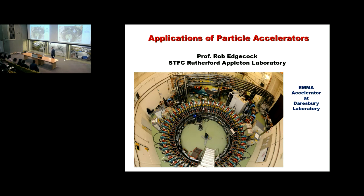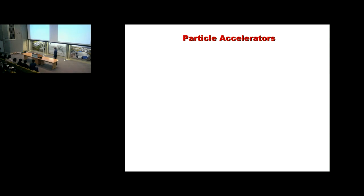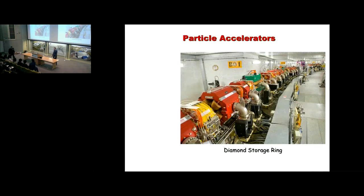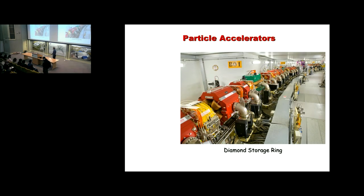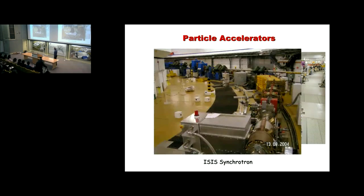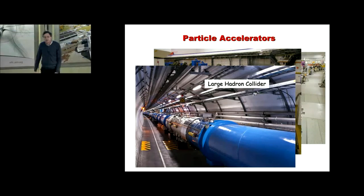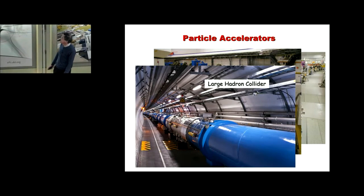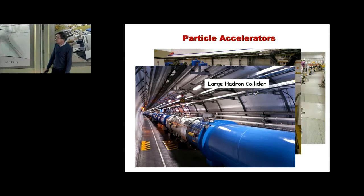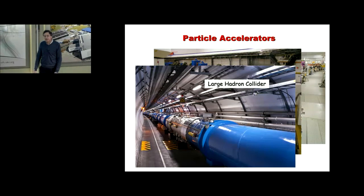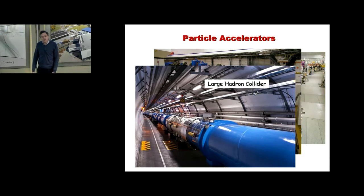Good afternoon. So already today you've heard quite a lot about particle accelerators, and in particular half of you will have seen and heard about this one. So this is a section of the Diamond synchrotron, the Diamond storage ring. The other half of you will have heard about this one - the ISIS synchrotron - and all of you will have heard about this one: a small section of the Large Hadron Collider at CERN. So what you may have understood is that particle accelerators tend to be large, complicated, expensive things, which are sometimes blue, and which are used for research.